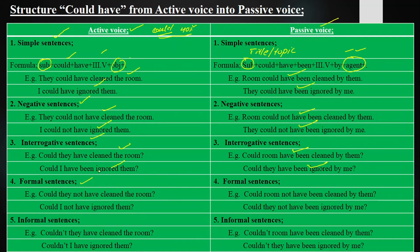Formal sentences are those in which we ask a question and deny the statement in a polite and respective way. We use them with our elders. For example: 'Could they not have cleaned the room?' becomes 'Could the room not have been cleaned by them?' And 'Could I not have ignored them?' becomes 'Could they not have been ignored by me?'